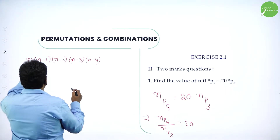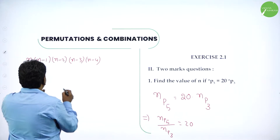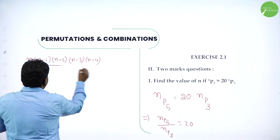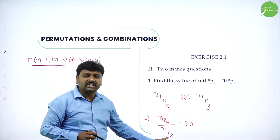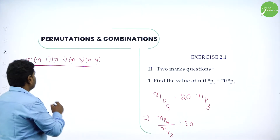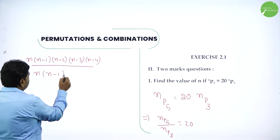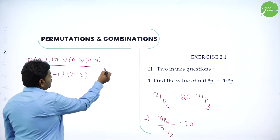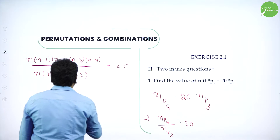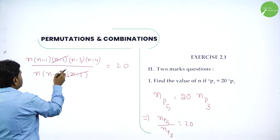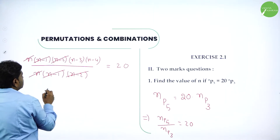NP5 means five terms: N, N minus 1, N minus 2, N minus 3, N minus 4 — total five terms — divided by NP3. What is NP3? Three terms starting from N: N into N minus 1 into N minus 2, equals 20. Now simplify: N minus 2 cancels, N minus 1 cancels, N cancels.